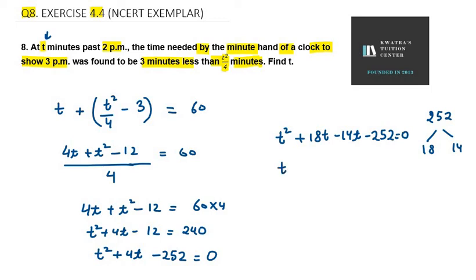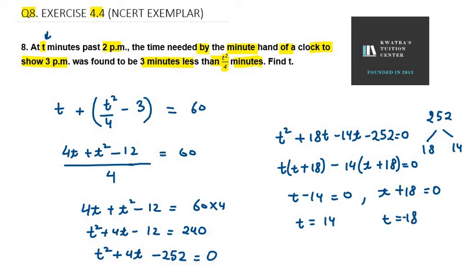Now take t common from the first two values, t plus 18, minus 14 common from the last two values. So it is either t minus 14 or t plus 18 equals 0. So it has two values, 14 or minus 18.